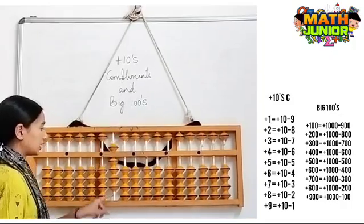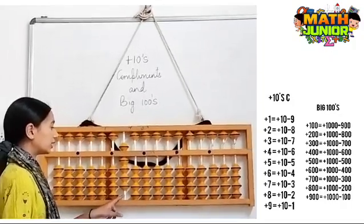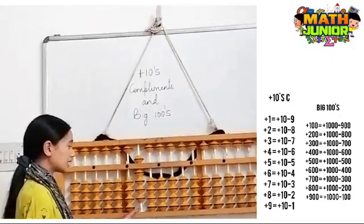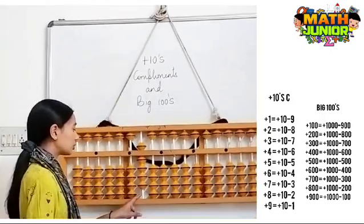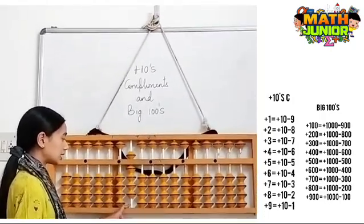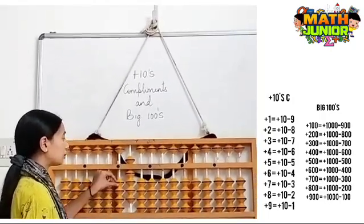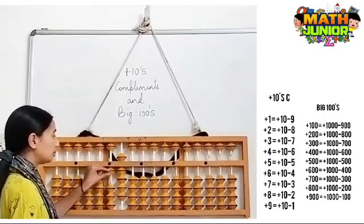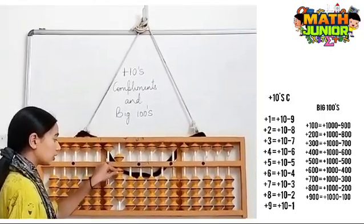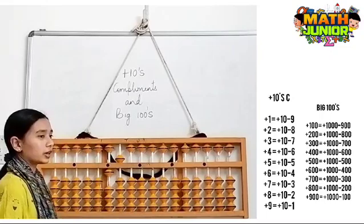Next, I have 900 here and I need to add 600. So the formula for plus 600 is plus 1000 minus 400.